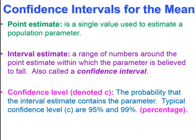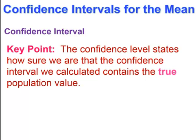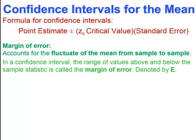Typical confidence levels are 95% and 99%, so the level of confidence will be a percentage. A key point is that the confidence level states how sure we are that the confidence interval we calculate contains the true population value. The formula for a confidence interval is built around the point estimate — we add and subtract a critical value, our z value, based on our level of confidence times the standard error. That quantity is known as the margin of error, and it accounts for the fluctuation of means from sample to sample. The range of values above and below the sample statistic is called the margin of error, denoted with a capital E.